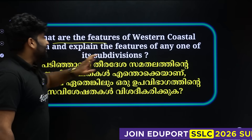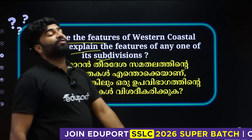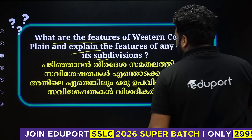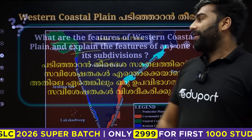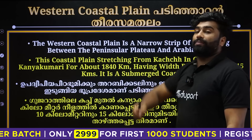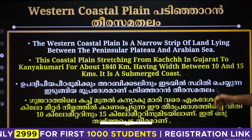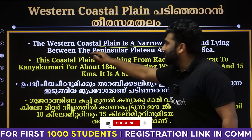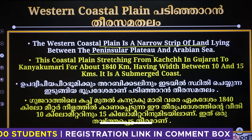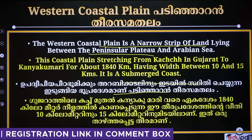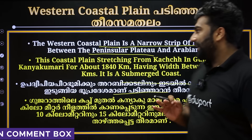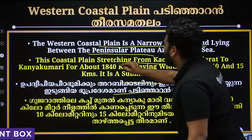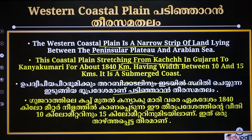What are the features of the Western Coastal Plain? And explain the features of any of its subdivisions. The Western Coastal Plain is the narrow strip of land between the Peninsula and the Arabian Sea. This coastal plain stretches from Kachcha to Kanyakumari — about 1840 km — having a width of 10 to 15 km.